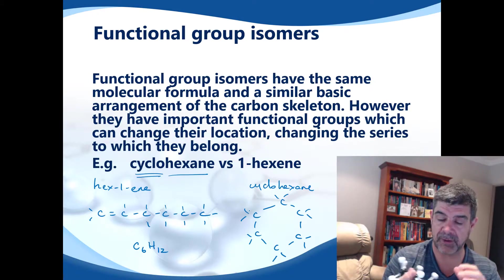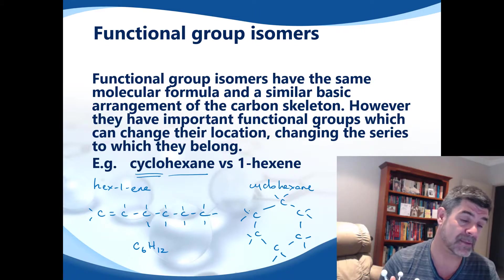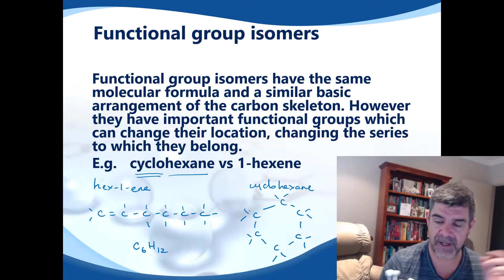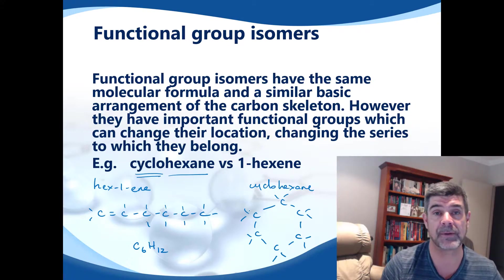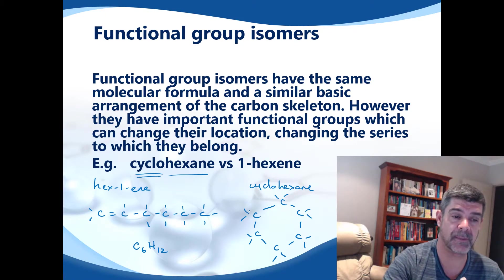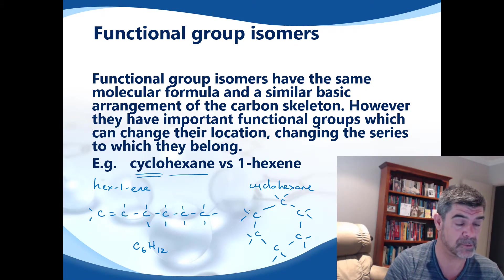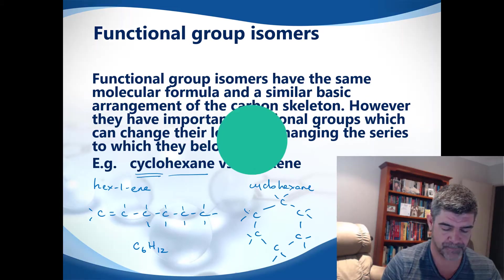Two groups that can create functional group isomers that aren't actually hydrocarbons are the aldehydes and the ketones. The key difference between those is the double-bonded oxygen either on an end carbon or on a middle carbon. Simply by moving that position, you're changing the functional group — while it's technically a change in position for that double-bonded oxygen, it also changes the functional group from an aldehyde to a ketone or vice versa.